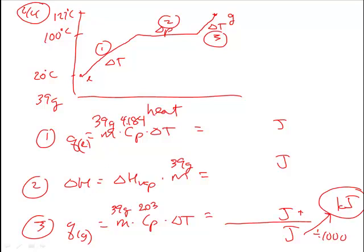And then the change in temperature is all you have to find. For step one, it goes 20 to 100, which is 80. For step two, it is the heat of vaporization, which is also given as 2260 joules per gram. And the delta T on the last one is 27.